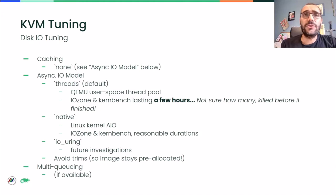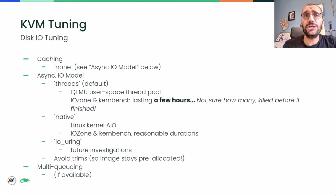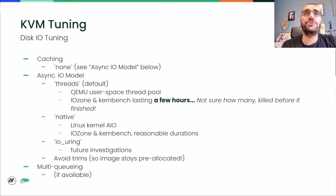Still about IO, we found that for our configuration — which uses a pre-allocated raw image as the VM disk — using the native IO model was really important. For instance, IOzone wasn't even able to finish unless we used IO equal to native. We are therefore using it for all configurations we show results for. Apart from that, there is tuning at the virtual device level, by specifying caching mode and whether or not we want to use multi-queuing.